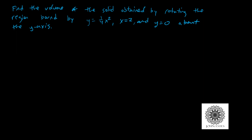First we're going to do the washers method, and then we'll look at cylindrical shells. You should always draw a picture if possible — it just helps make things clear. We have x equals 2, so that's a vertical line boundary, y equals 0 which is the x-axis, and y equals 1/4 x squared which is a parabola. At x equals 0, y equals 0; at x equals 2, y equals 1/4 times 4 which is 1. So we go from 0 to 1 in the y direction.